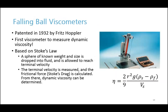Next up, we have falling ball viscometers. These viscometers were patented in 1932 by Fritz Höppler and are the first to measure dynamic viscosity. The principle is based on Stokes law: a sphere of known weight and size is dropped into a fluid and allowed to reach terminal velocity. The terminal velocity is measured, from which the friction force — Stokes drag — is calculated. Once you have Stokes drag, Stokes law allows you to determine dynamic viscosity. As you can see in the equation on the right, the viscosity is related to the radius of the ball, the gravitational constant, the density of the sphere and fluid, and the terminal velocity of the sphere.